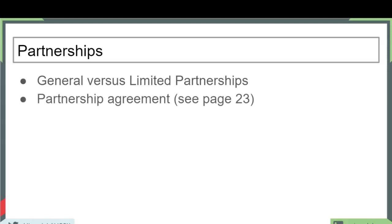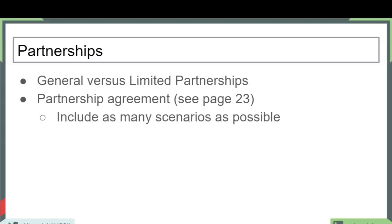Something very important in the partnership is the partnership agreement. There is a similar document for each form of business organization once we grow beyond sole proprietorship. The textbook has a detailed list of things to take into account when developing a partnership agreement. You want to include as many scenarios as possible — particularly the less favorable ones. When things are good, all the partners are happy, but the partnership agreement is most important when things are not going well and you need it to guide you through those rough times.